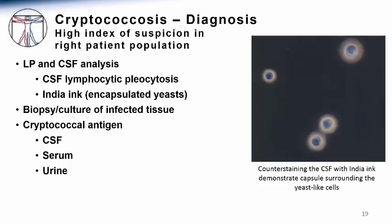One very important diagnostic tool is the cryptococcal antigen. The polysaccharide capsule is released from the organism and can be detected by serological means. This is a very sensitive and specific test, most often performed in cerebrospinal fluid or serum in disseminated infections.